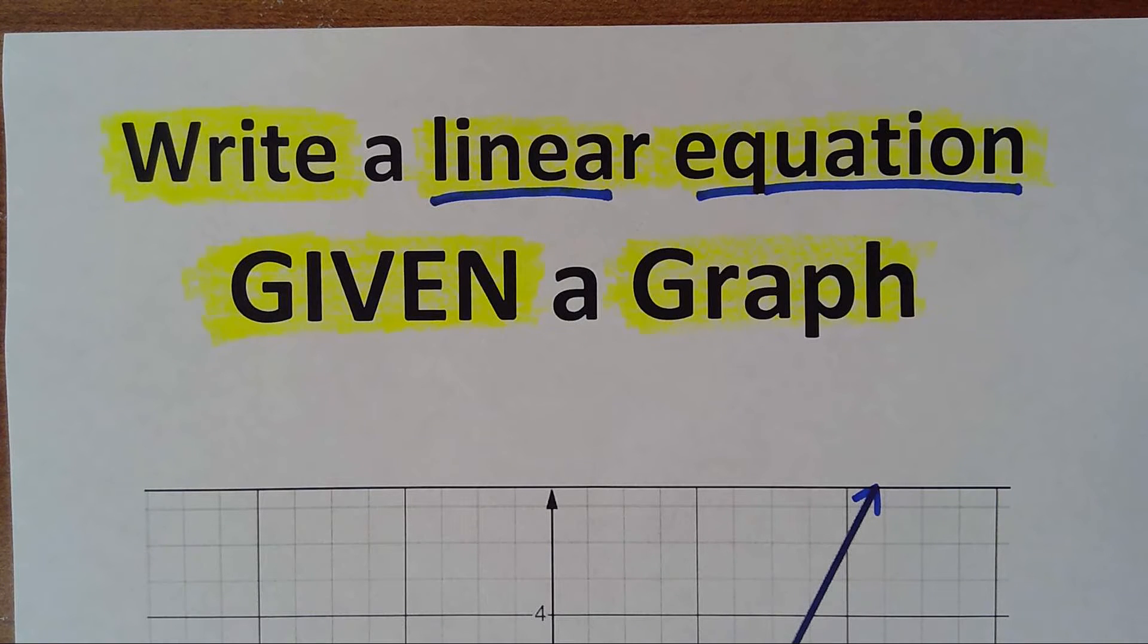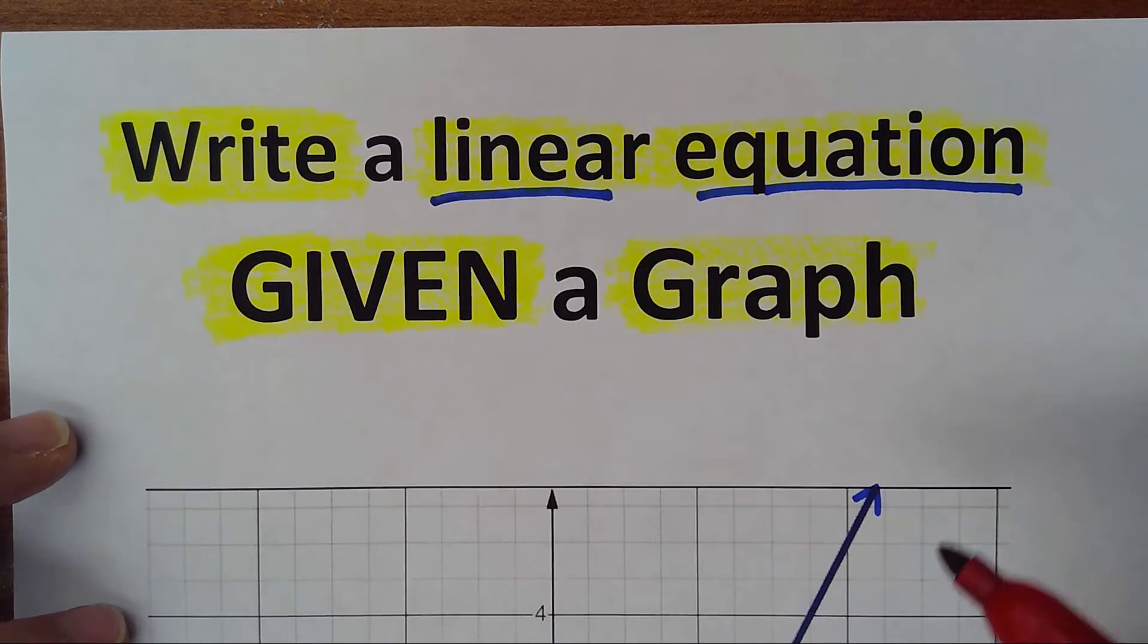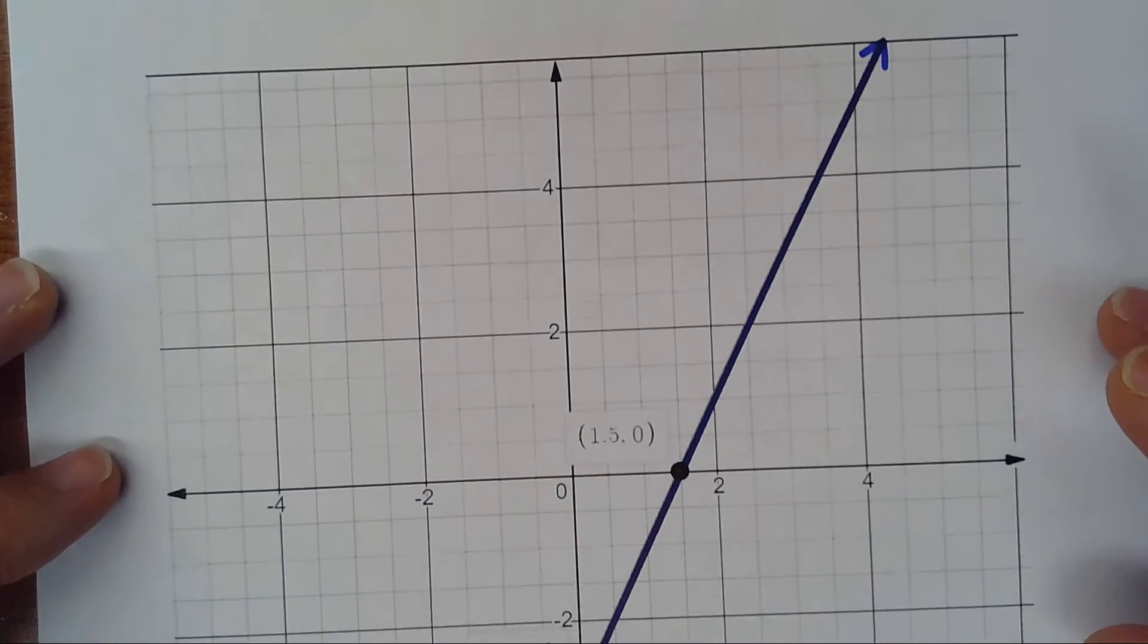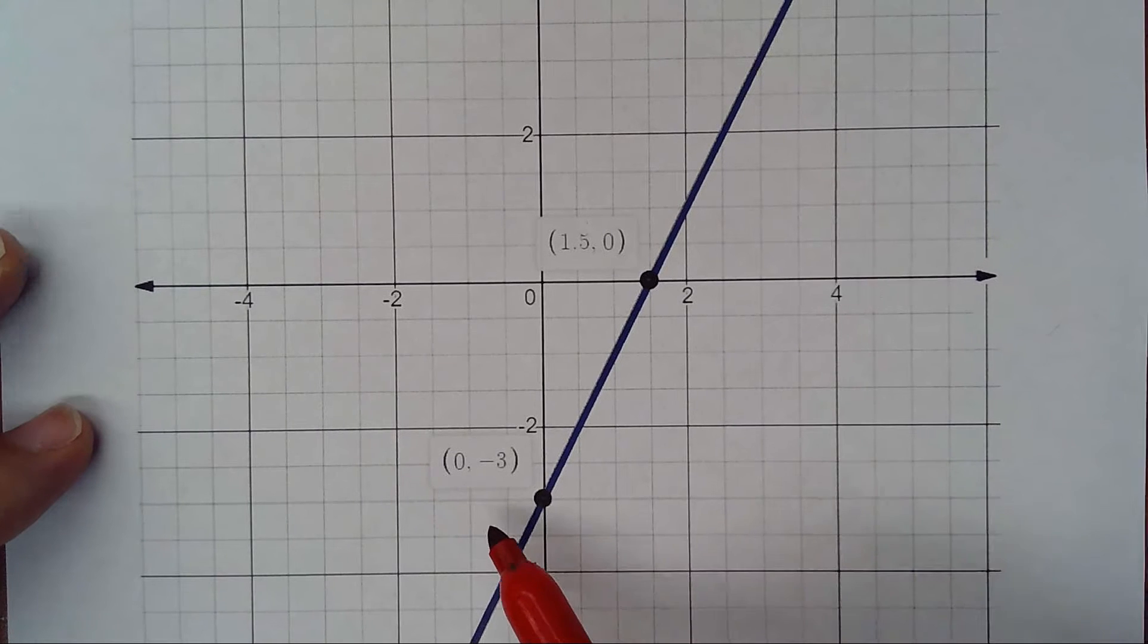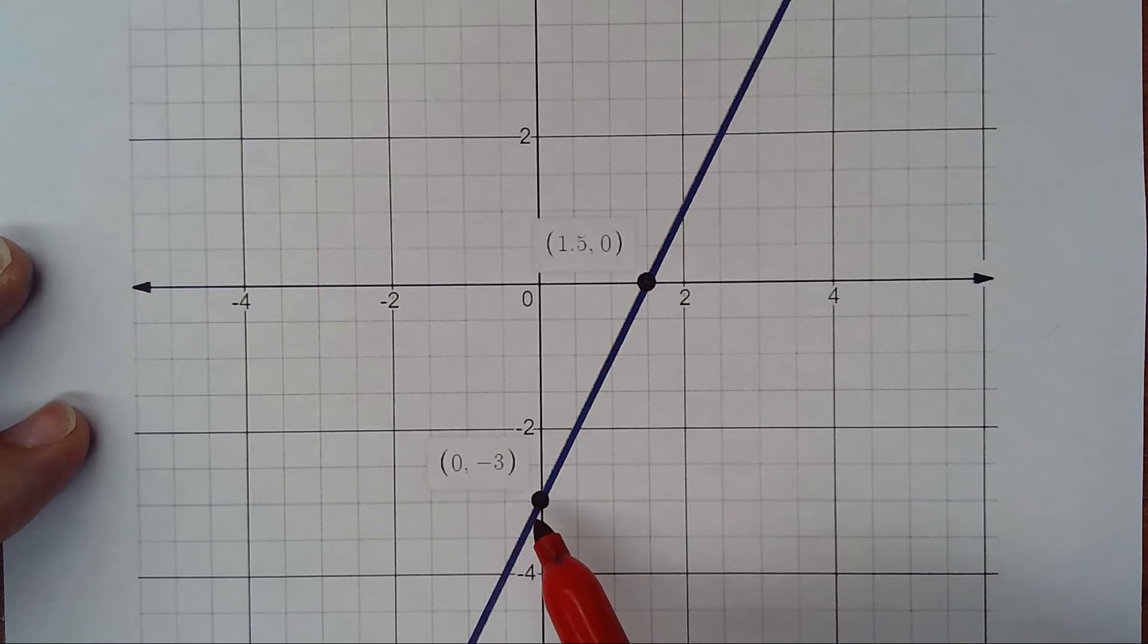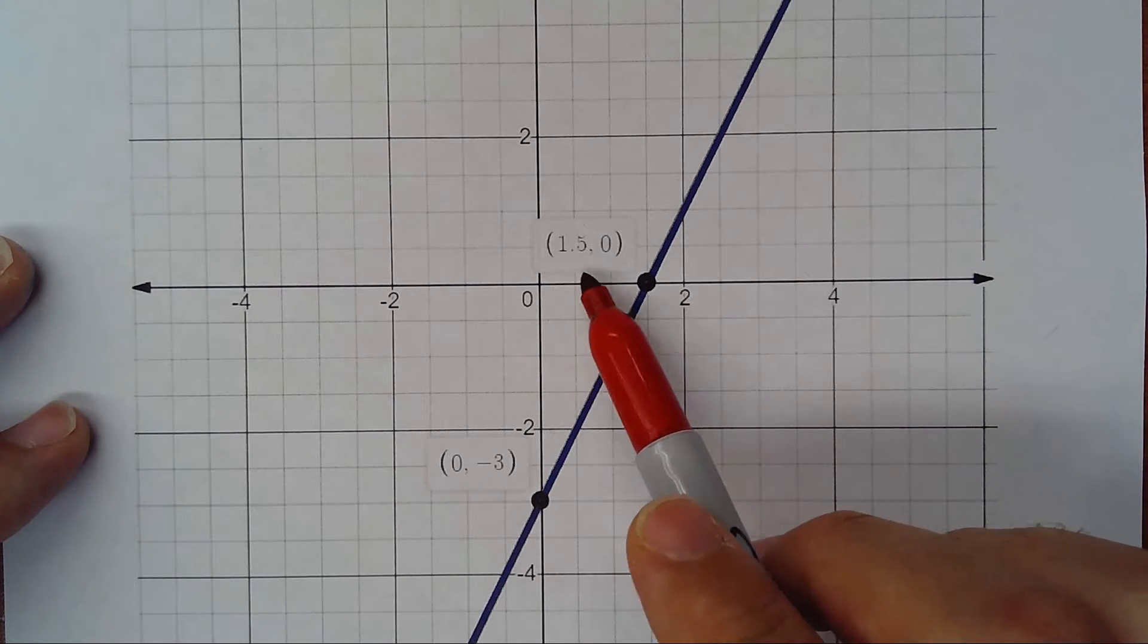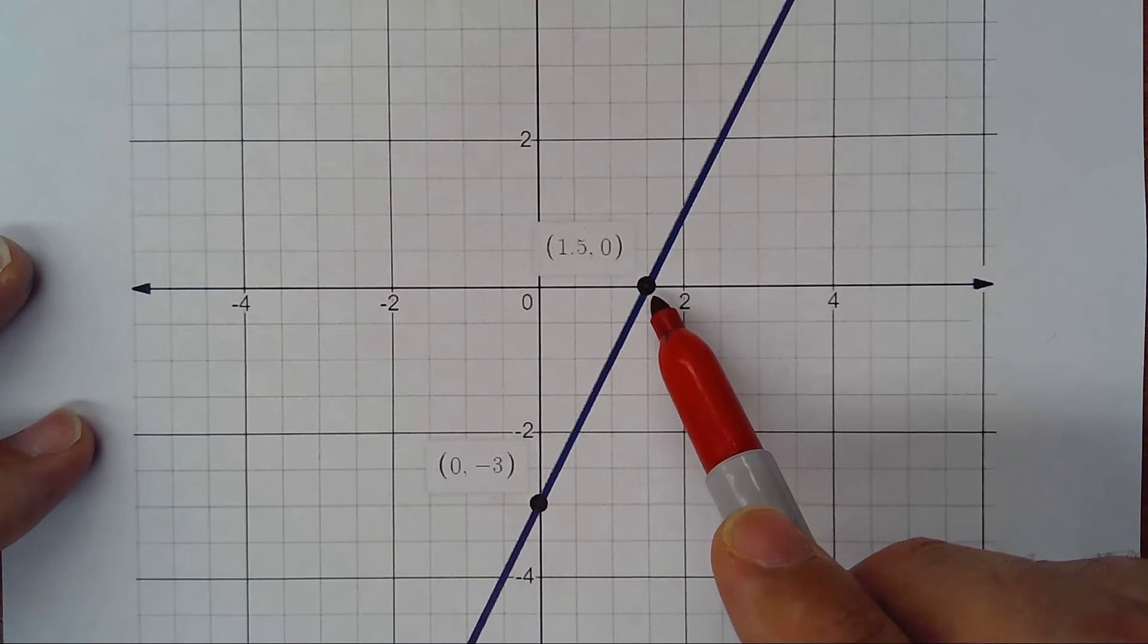Write a linear equation given a graph. Here we have a graph and need to write the linear equation. I see an intercept at (0, -3), this is the y-intercept, and (1.5, 0), this is the x-intercept.